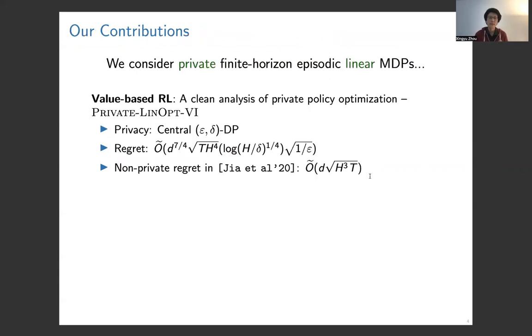Our contributions: we consider private episodic linear MDPs. In particular, we consider value-based linear MDPs. We derive algorithms called PRIVATE-LINOPT-VI. It can provide the central (ε,δ)-DP guarantee, and also with a regret bound which scales only with respect to T, in order of square root of T. For comparison, the non-private regret bound is also the same order in terms of T.